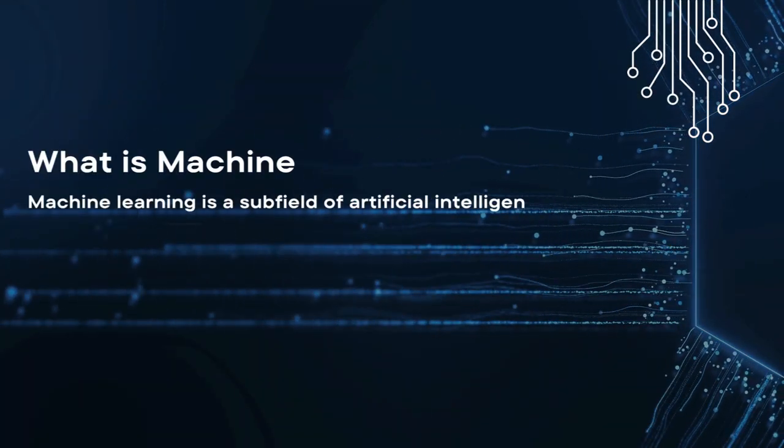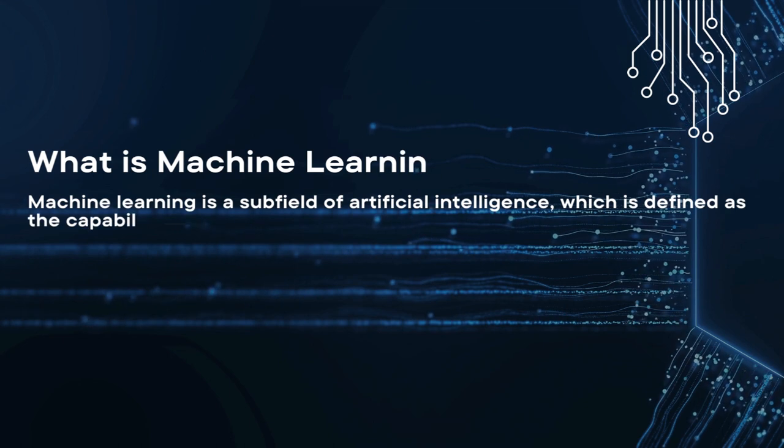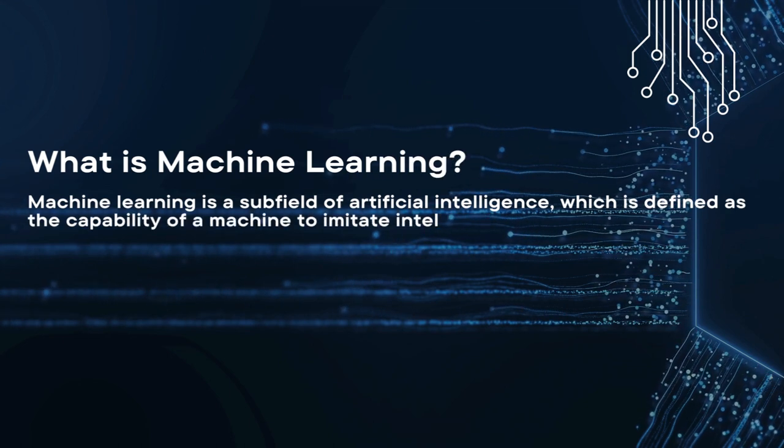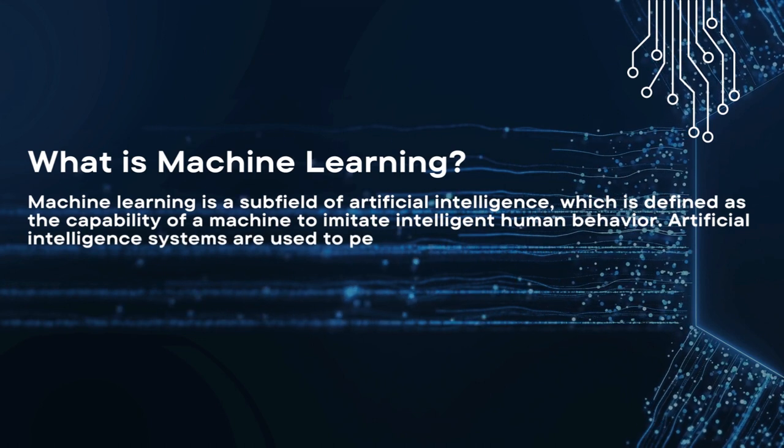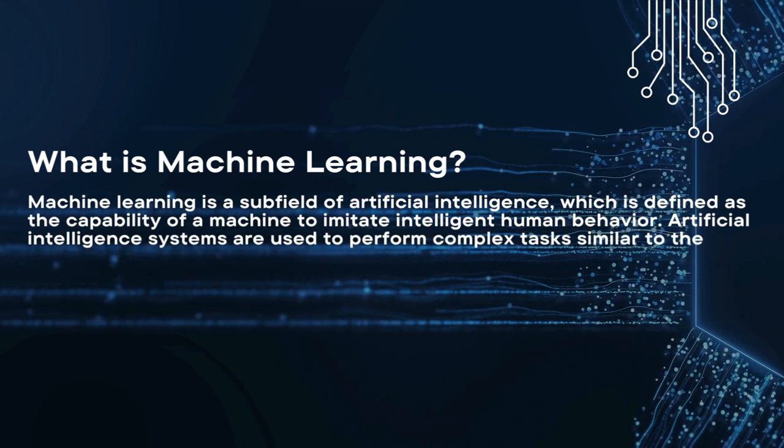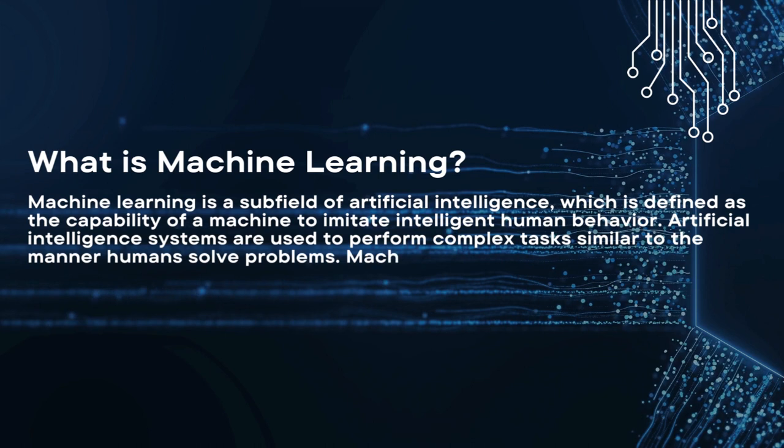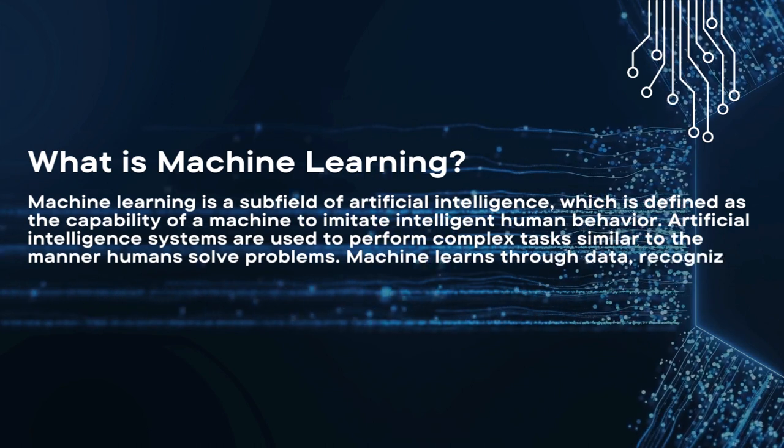Machine learns through data, recognizes patterns, and solves problems like humans. Types of machine learning algorithms are supervised learning and unsupervised algorithms.